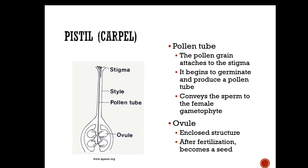The pollen tube runs down the style — the pollen attaches to the stigma, begins to germinate, and produces a pollen tube that brings the sperm to the female portion of the flower. The ovule is the enclosed structure where it's delivered, and after fertilization the ovule becomes a seed.